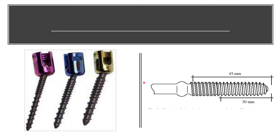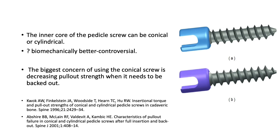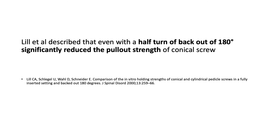Here is an example of the various designs: a dual core diameter thickened around the neck, and dual thread systems with a shorter pitch near the pedicle and a longer pitch engaging the vertebral body. Based on the inner core, a pedicle screw can be cylindrical or conical. Which is biomechanically better is still controversial, but a key concern with conical screws is decreasing pull-out strength when backed out. Studies show that even a half turn back-out of 180 degrees significantly reduces pull-out strength of a conical screw.